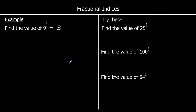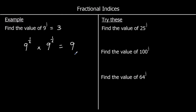I'm going to quickly show you that this works. If you've got 9 to the power of a half, and you multiply it by 9 to the power of a half, when you multiply indices you add the powers. So that gives us a half plus a half makes one whole — 9 to the power of 1, which is just 9. So 9 to the power of a half multiplied by 9 to the power of a half equals 9. What number multiplied by itself makes 9? That's 3 — 3 times 3 makes 9 — so 9 to the power of a half must be equal to 3.